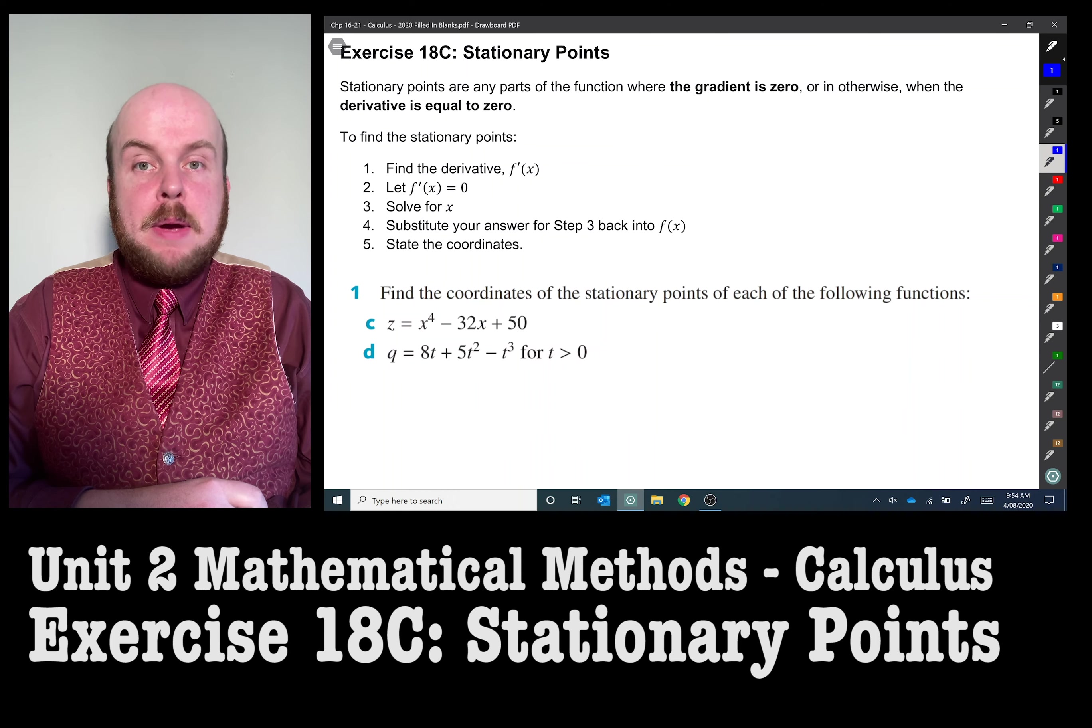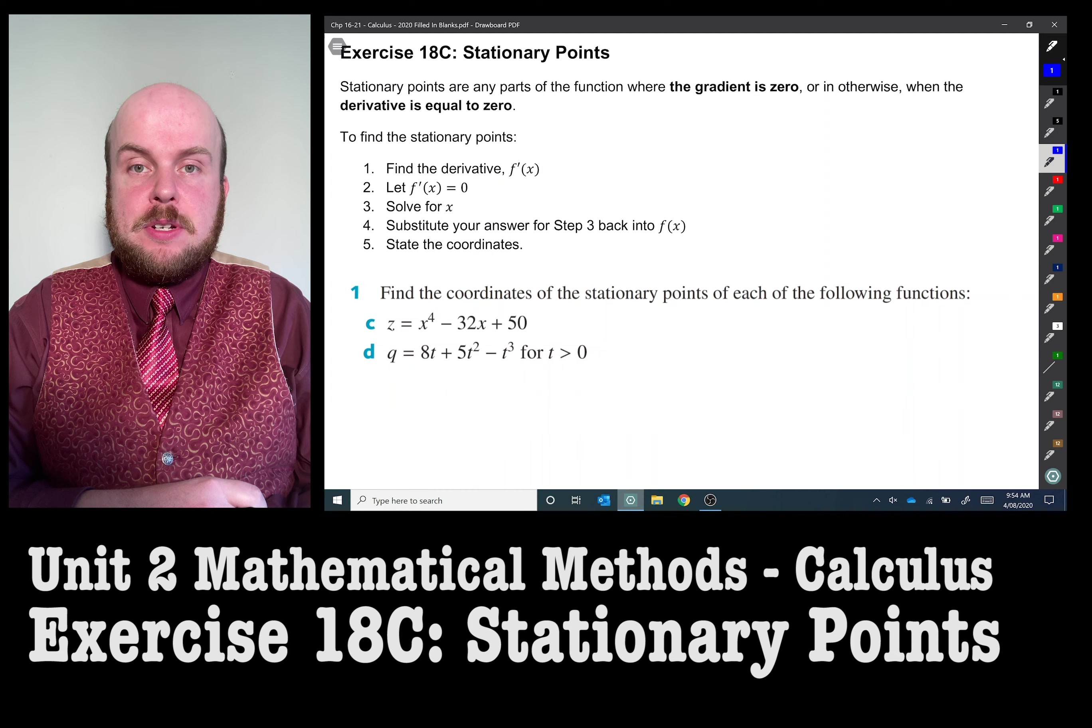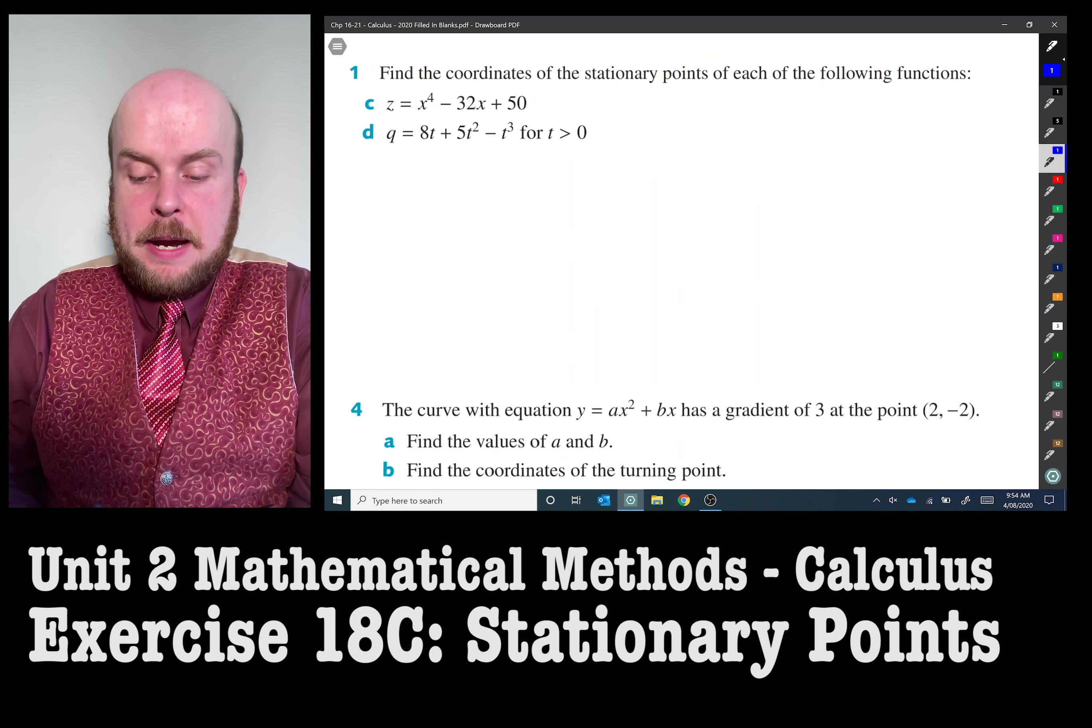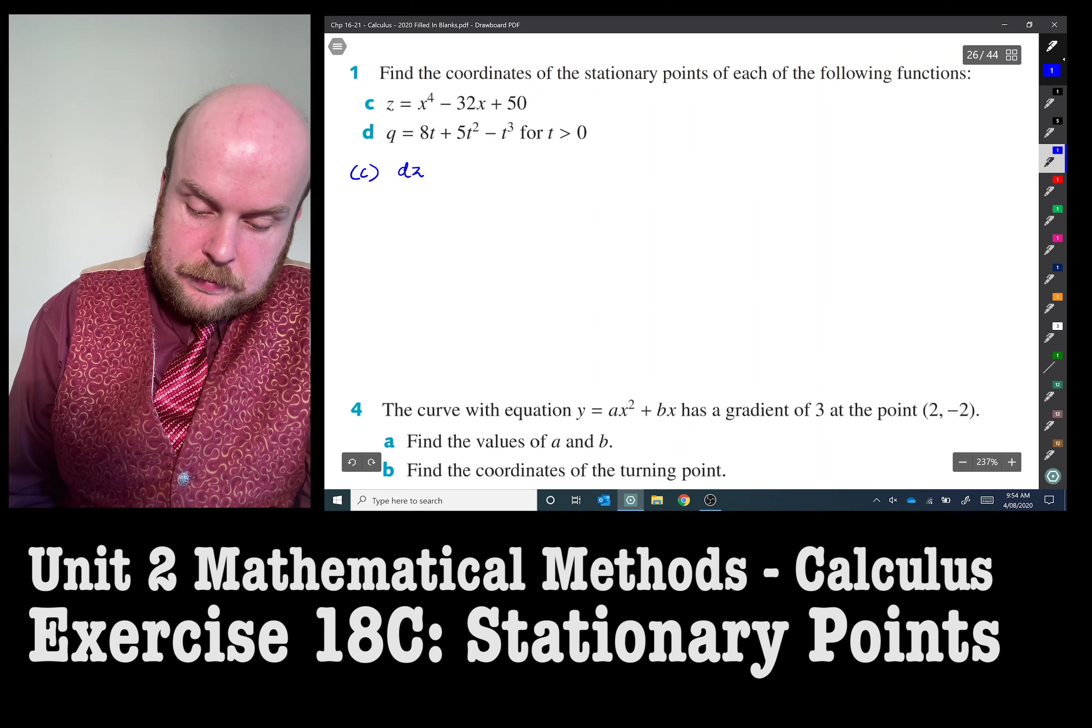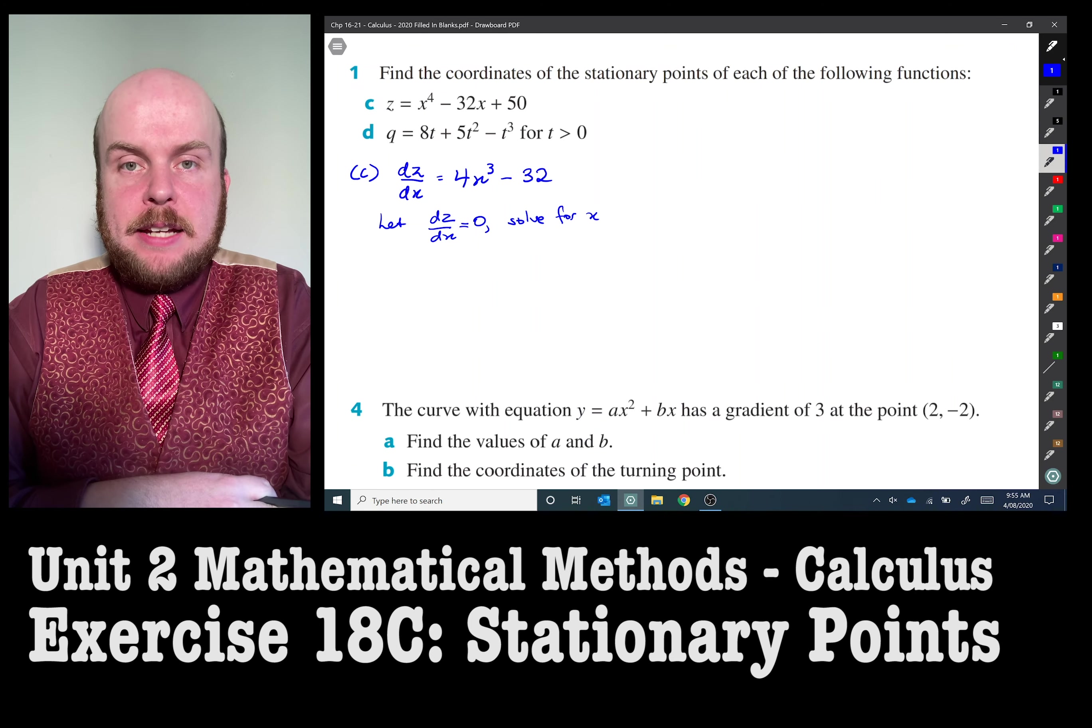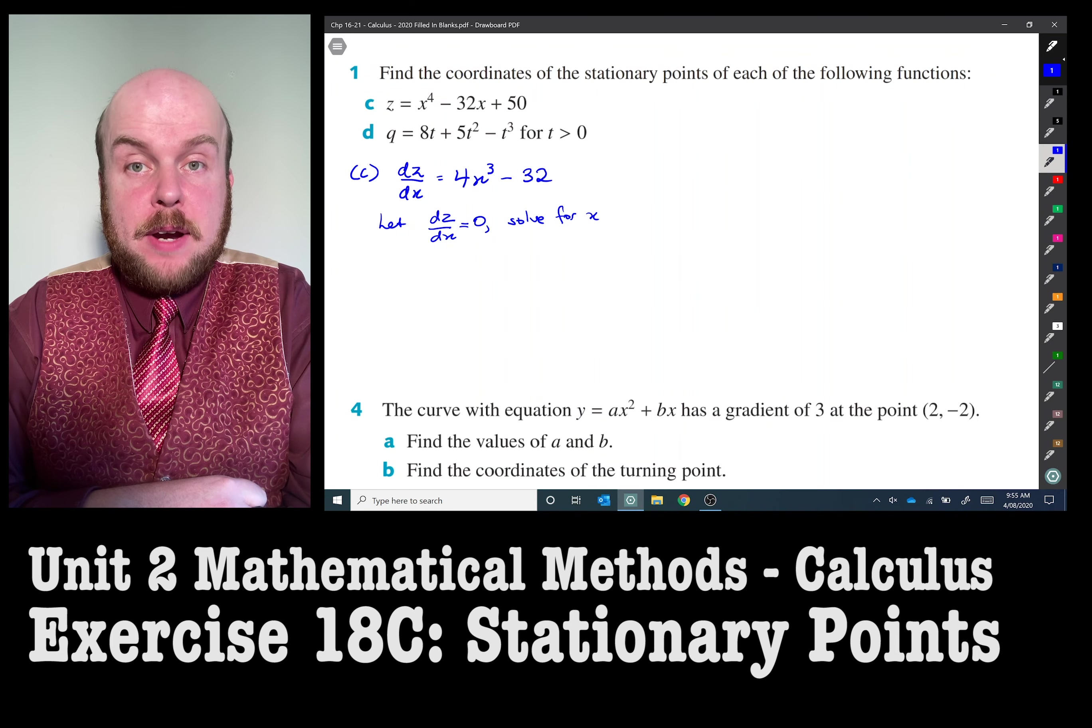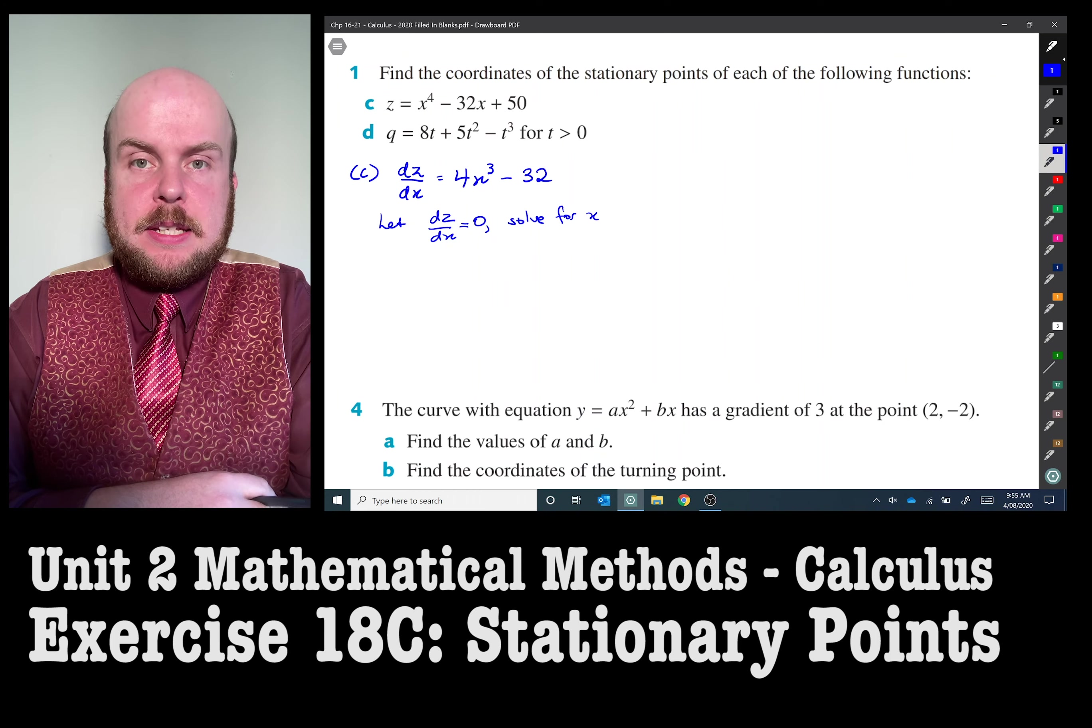We're going to find the derivative, make that equal to zero, solve for x, and then substitute that value back into the original equation to find the y value. I'm going to start with c and find the derivative of z equals x to the power of 4 minus 32x plus 50. So I found the derivative. Please note that I wrote dz/dx because it's not a y, it is a z. Always make sure that you take care to check your variables. Now I've let it equal to zero, and now I'm going to solve for x to find the coordinates of the stationary points.